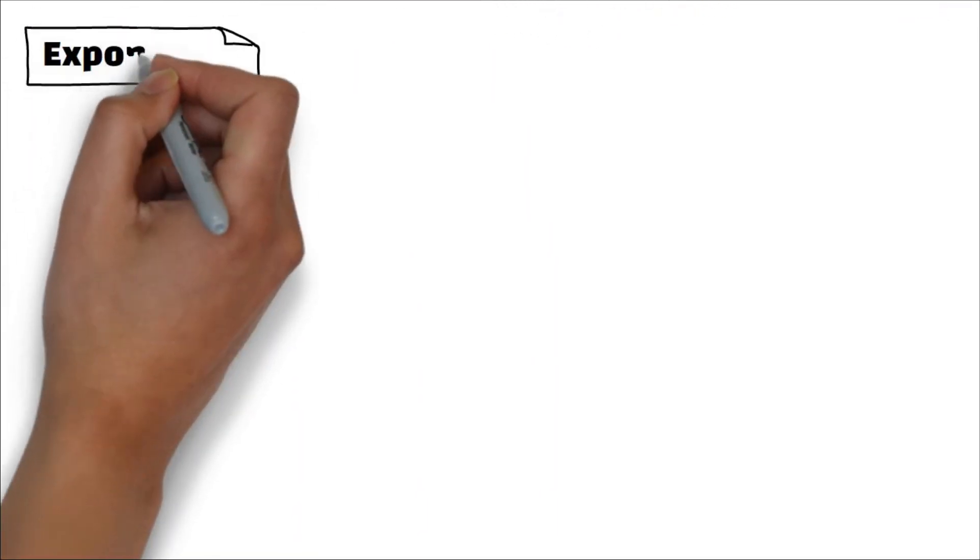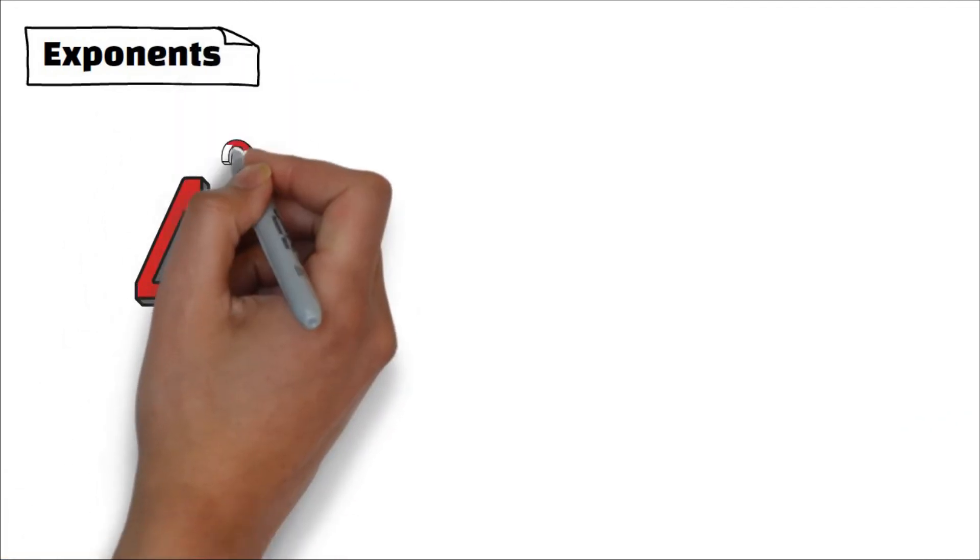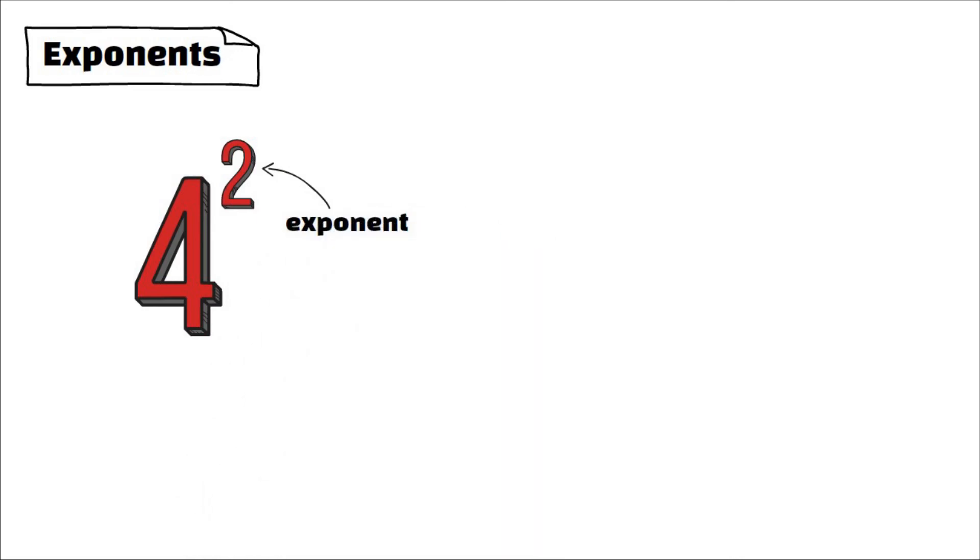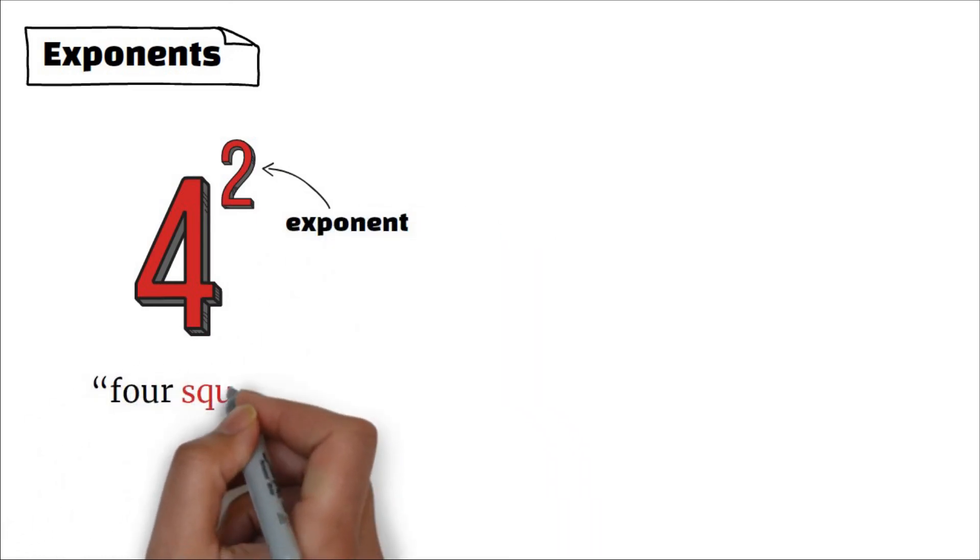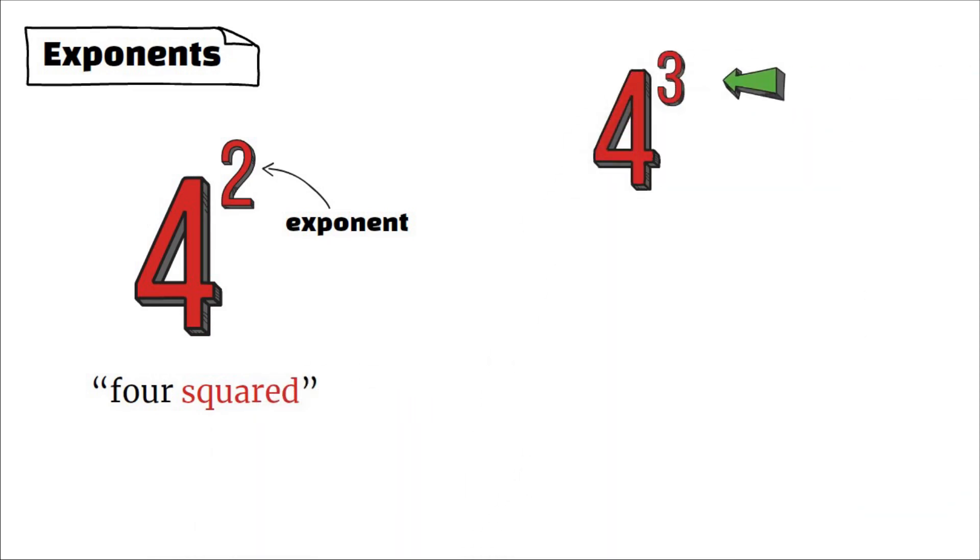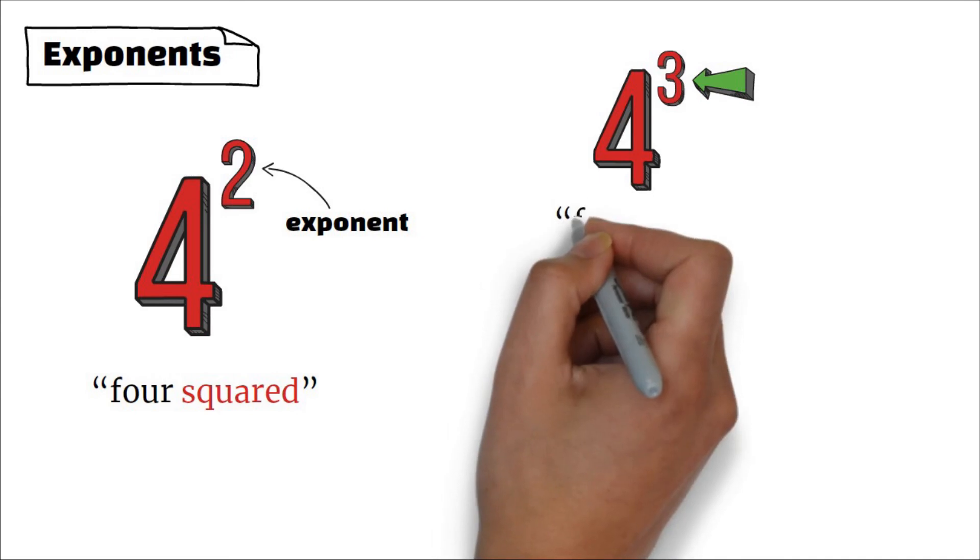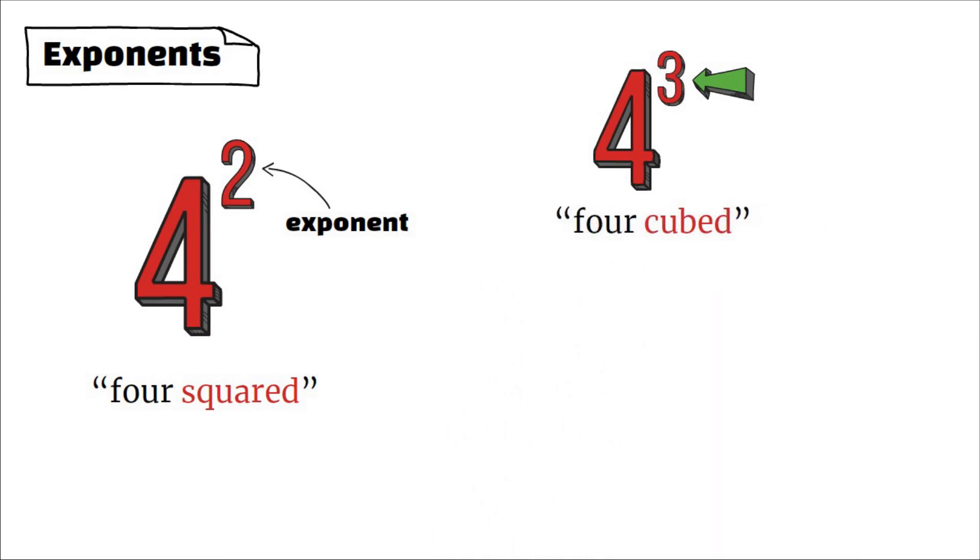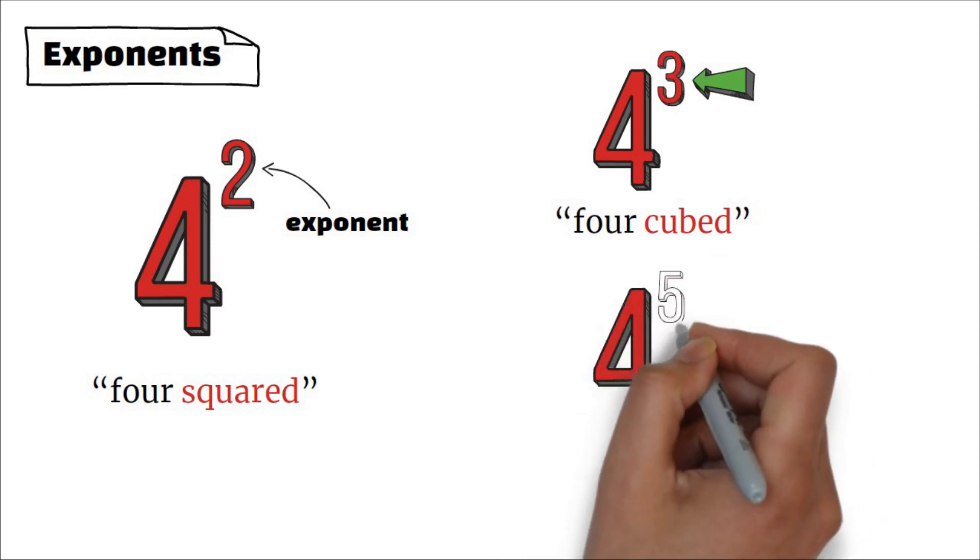Okay, let's now move on to the last subsection: exponents. The small value is called the exponent. We read the number as four squared. If the exponent value is three, like in this example, then we say four cubed.